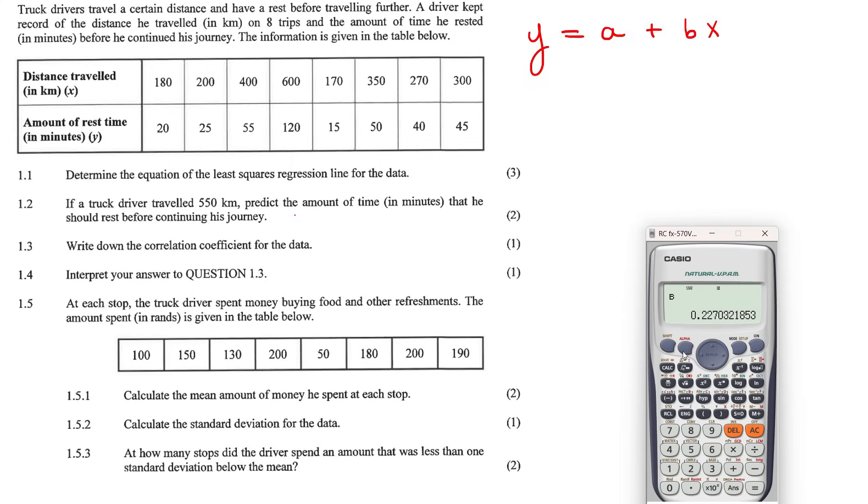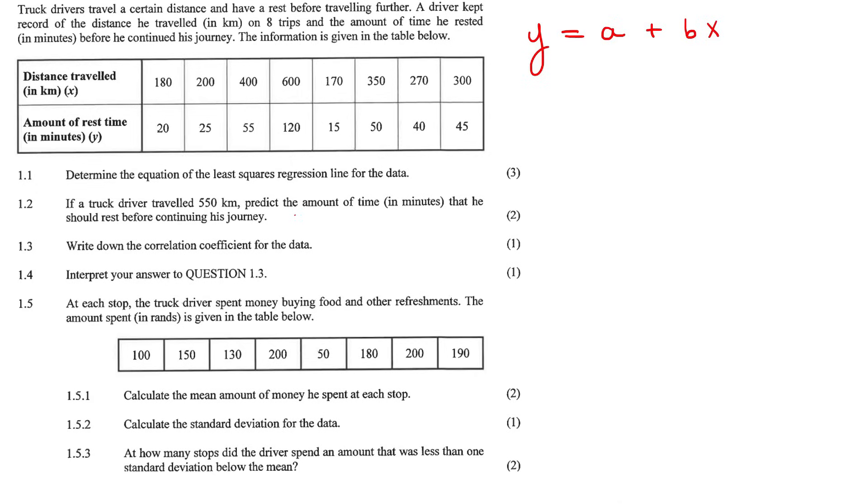I'm going to get the R value as well because they do ask us that in question 1.3. So you just go here and then R is with the three, press equals 0.98. We can then fill in our equation because we now know that A is negative 23.85. B is 0.23X. So that's question 1.1 complete.